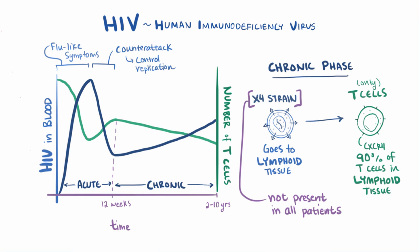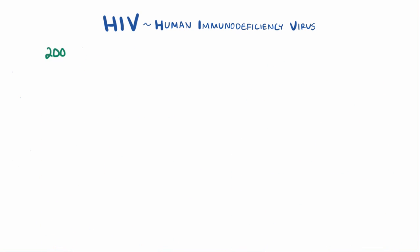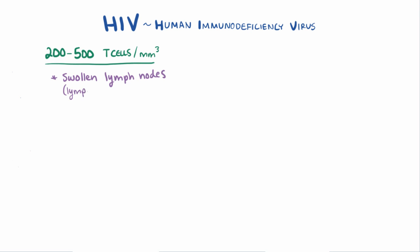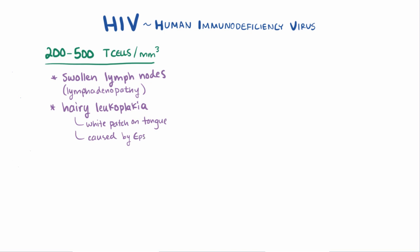When the body's T cells drop low enough — between about 200 and 500 cells per cubic millimeter — patients start experiencing symptoms like swollen lymph nodes or lymphadenopathy, as well as relatively minor infections like oral hairy leukoplakia, a hairy-looking white patch on the side of the tongue caused by the same Epstein-Barr virus that causes mononucleosis, as well as oral candidiasis, a yeast infection in the mouth.